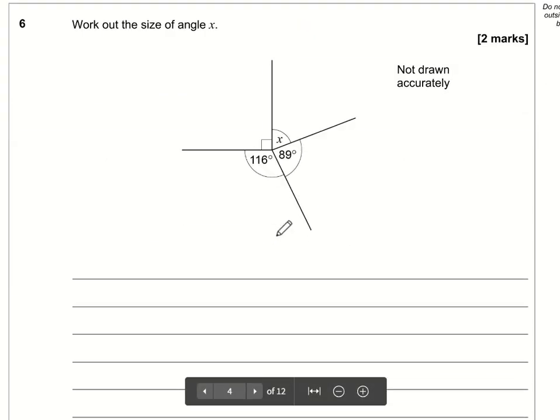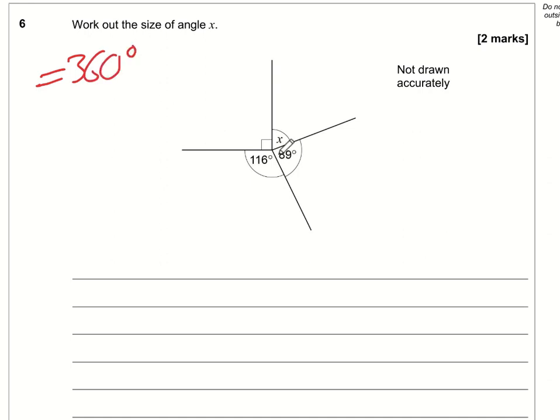Question number six. Work out the size of angle x. Here we have angles around a point and angles around a point add up to 360 degrees. So what have we got so far? We also need to remember that this square here represents a right angle so this is 90 degrees. So we have 116 degrees, we've got a 90 and we've got an 89.